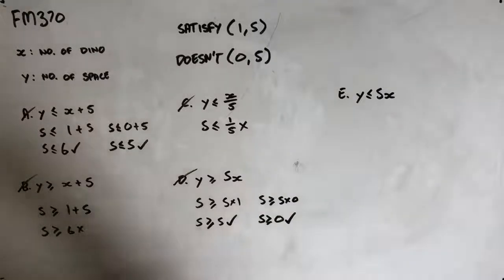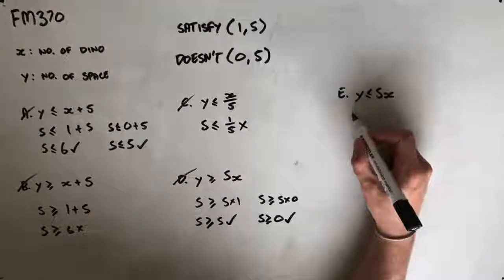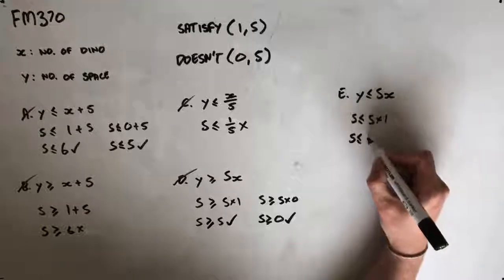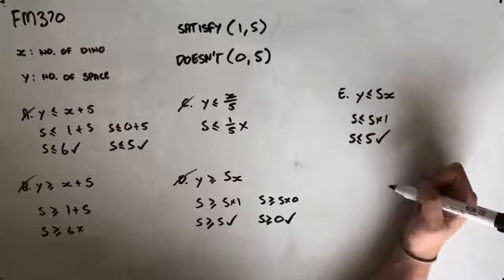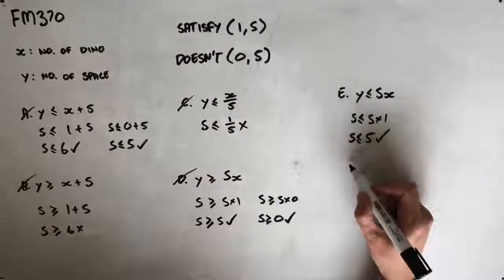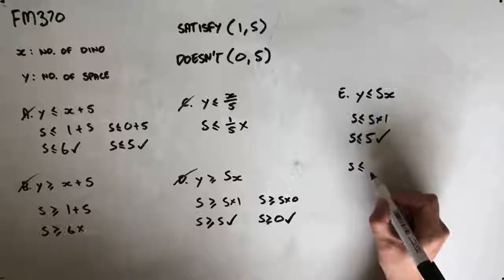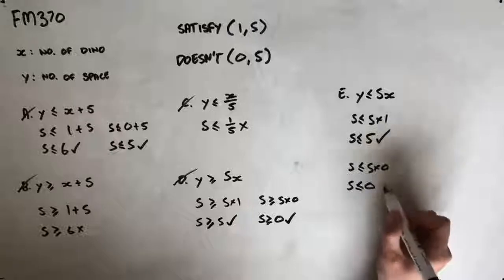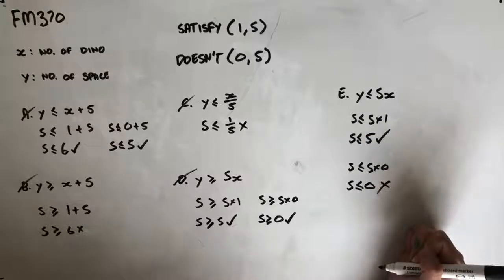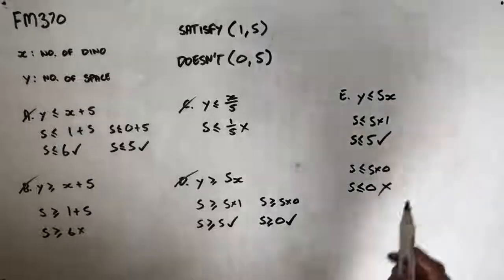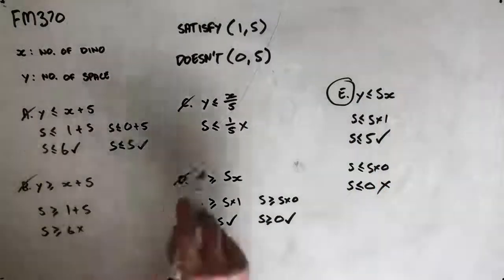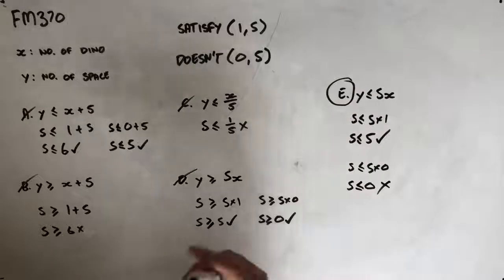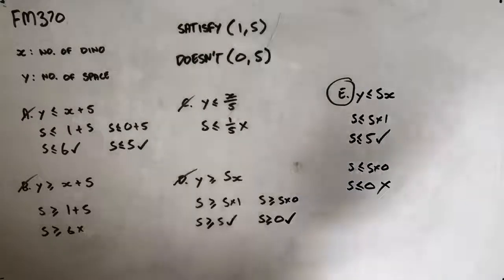This leaves option E, but we're going to check it anyway. Five is less than or equal to five times one, which means five is less than or equal to five — that satisfies our inequality. Putting the conditions that shouldn't satisfy in, five is less than or equal to five times zero, so five is less than or equal to zero. That does not satisfy the inequality, which means E is our correct answer. If you have any questions, drop them in the comments below — I'll see you in the next video.